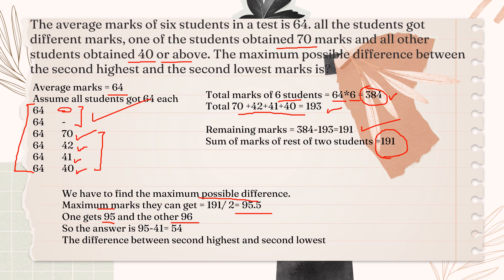We give one child 95 marks and the other child 96 marks, so here we write 95 and here 96. Now we know the marks of all students. The highest marks is 96 and the second highest is 95. The lowest marks is 40 and the second lowest is 41. So the difference between 95 and 41 is 54. 54 is the correct answer.